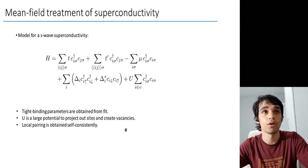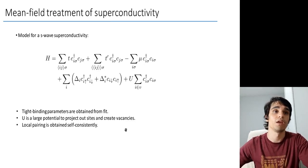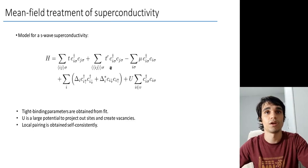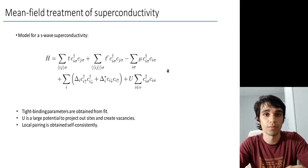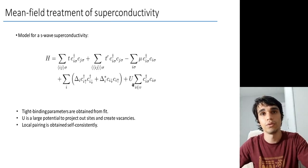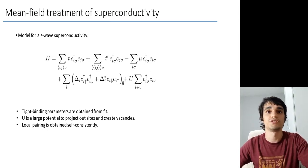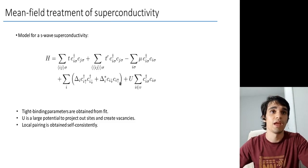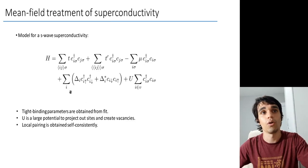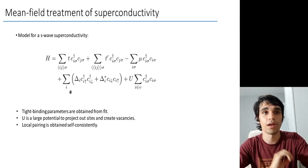And to investigate this case, we propose a model of S-wave superconductivity, where the tight binding parameters here are obtained from a fit of the DFT calculation that I showed before. This U parameter here is just a large potential that we use to project out these sites and create these vacancies. And these delta_i are the local pairing amplitudes.